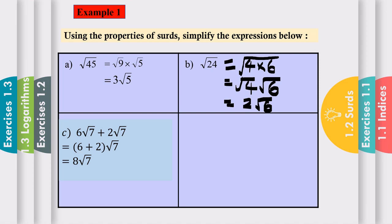Example c: 6 square root 7 plus 2 square root 7. Since we have square root 7 and square root 7, we can factorize the square root 7, and the coefficients will be 6 plus 2, times square root 7. Simplifying, the answer is 8 square root 7.